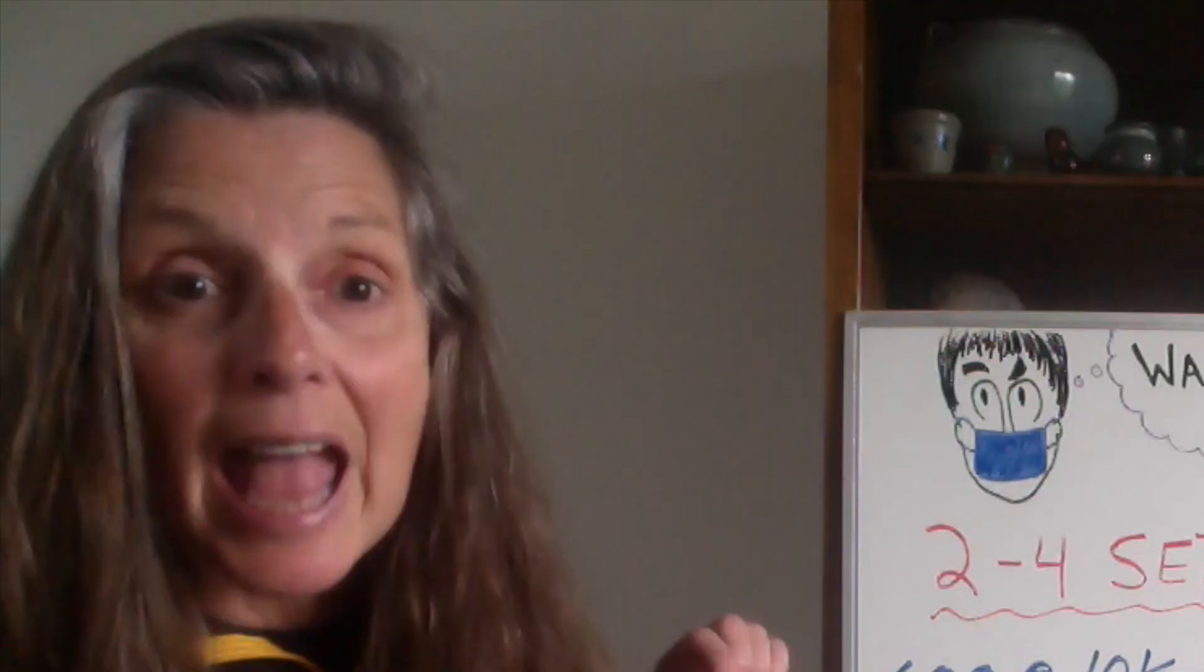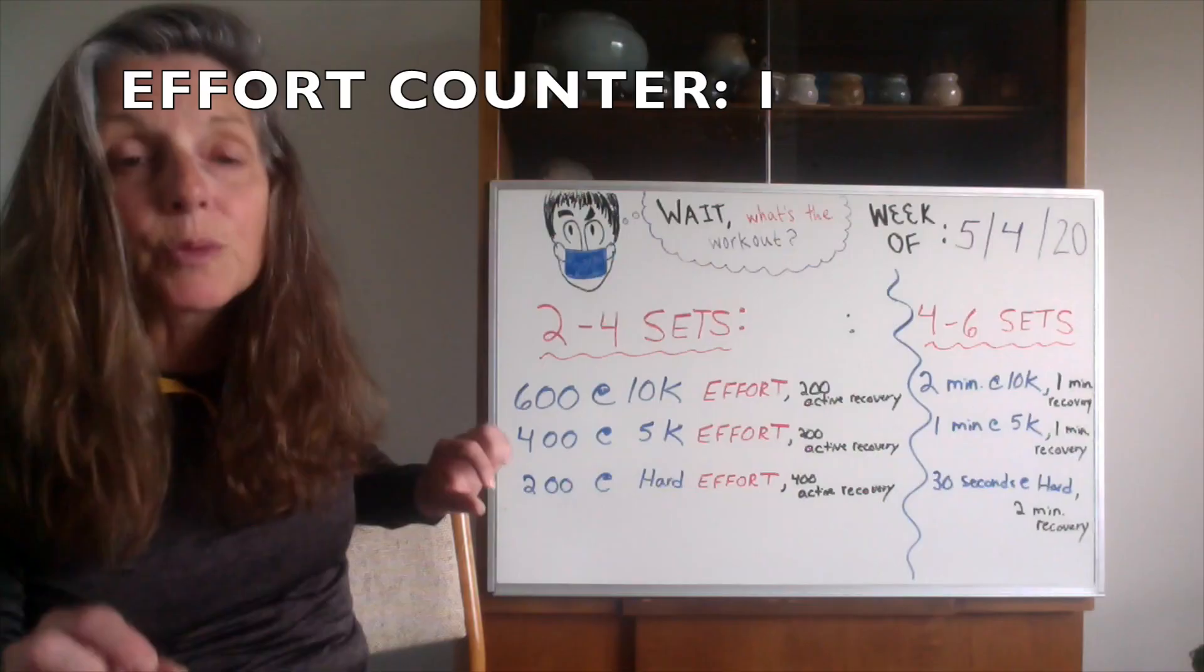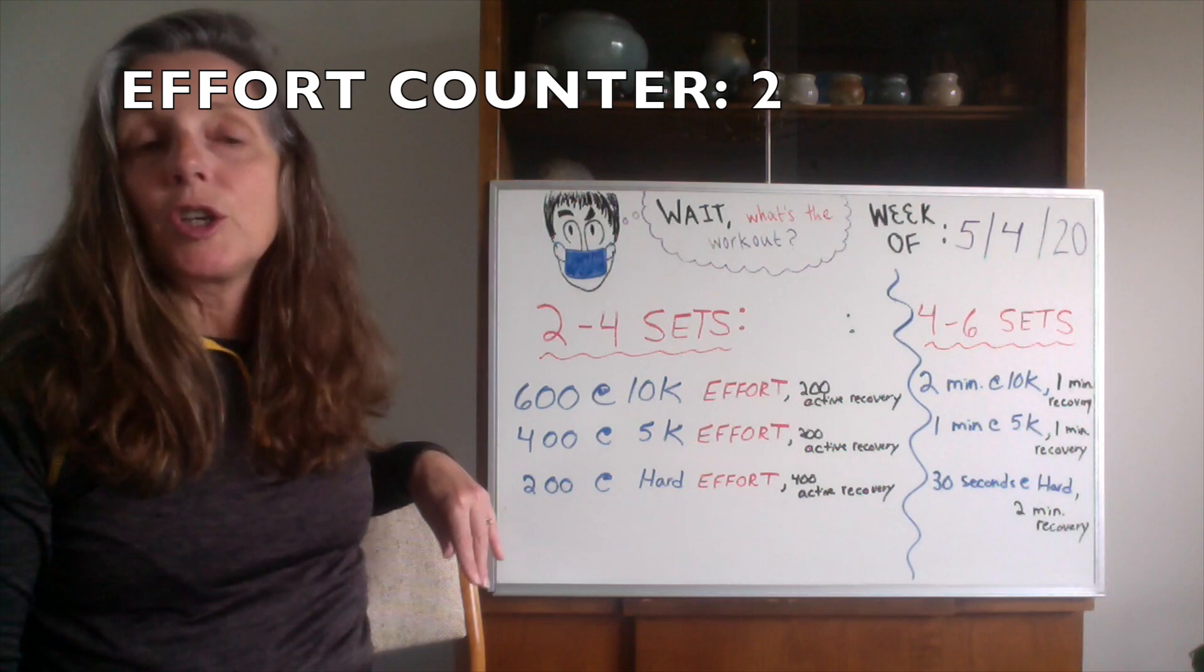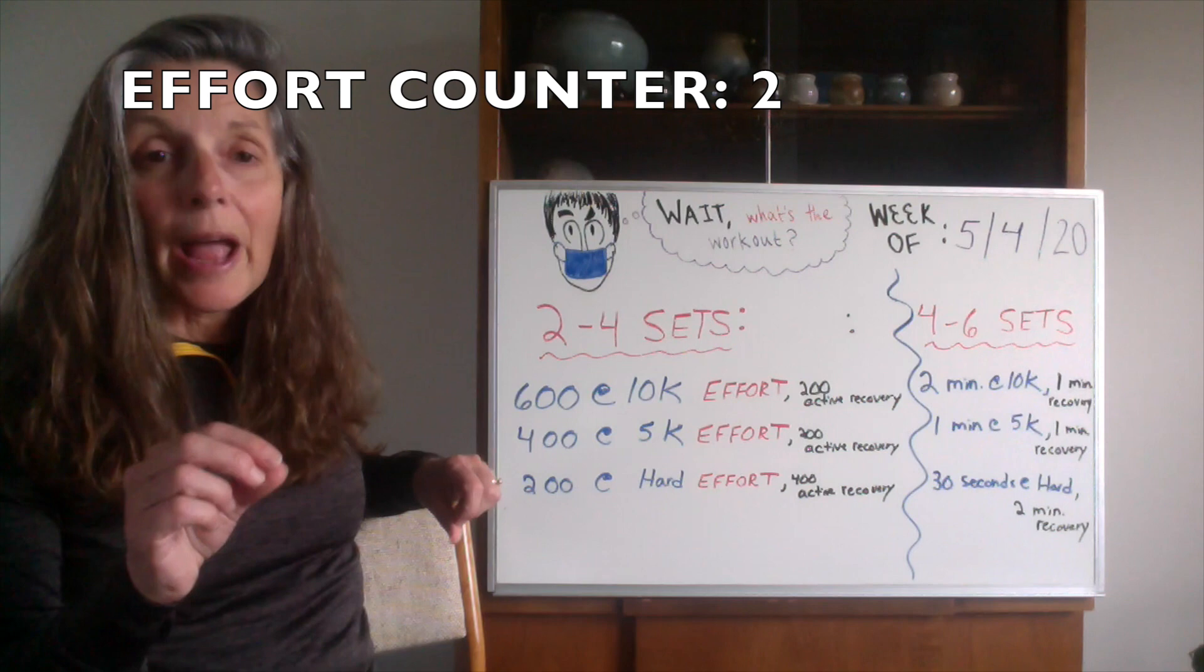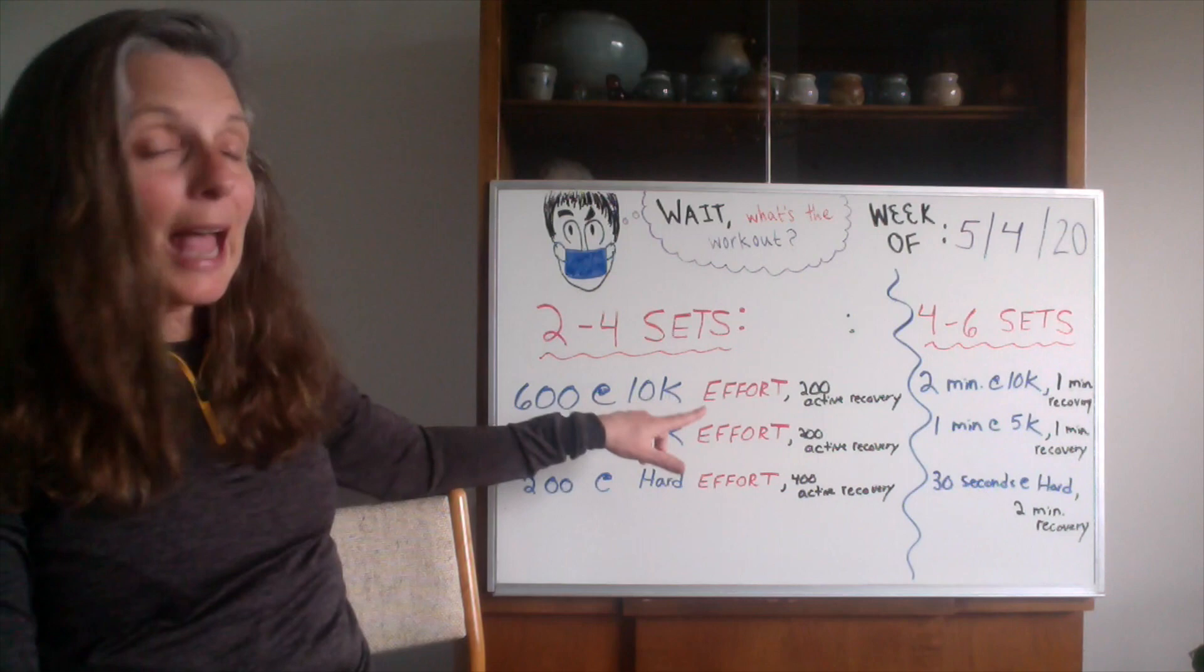We did this workout a few times last year. I really like it—it's nice, short, and sweet. Once again we're doing active recovery, so you're going to do 600 meters at 10K effort. Remember, this is effort, it's not based on your goal pace for the fall or in two years, it's where you're at right now.